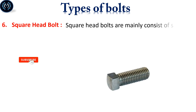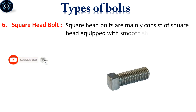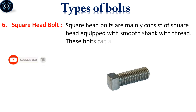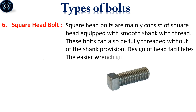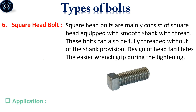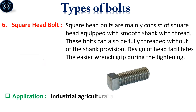Square head bolts mainly consist of a square head equipped with a smooth shank with thread. These bolts can also be fully threaded without the shank provision. The design of the head facilitates an easier wrench grip during tightening. Square head bolts are used for industrial, agricultural, and construction applications.